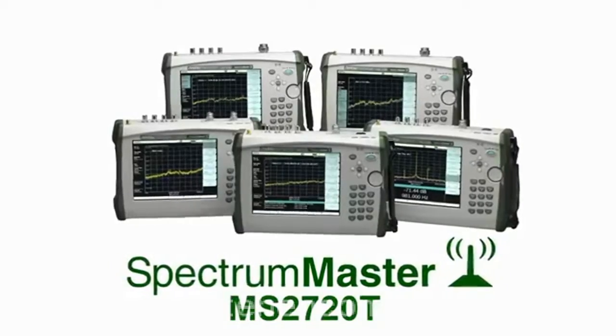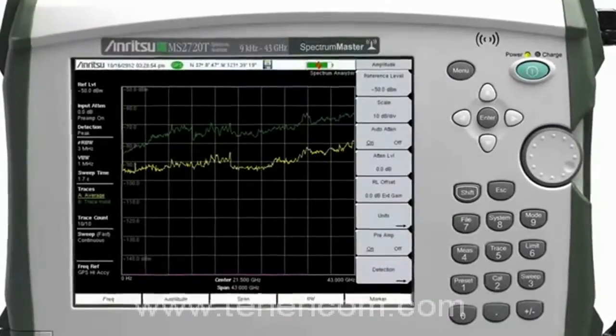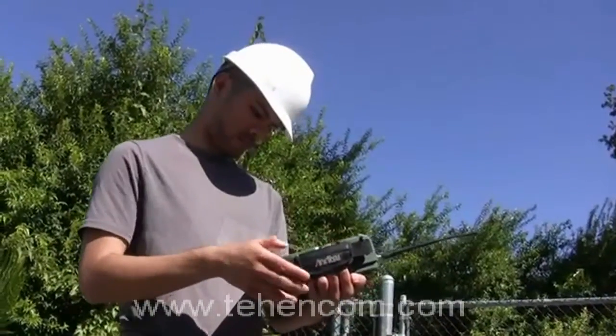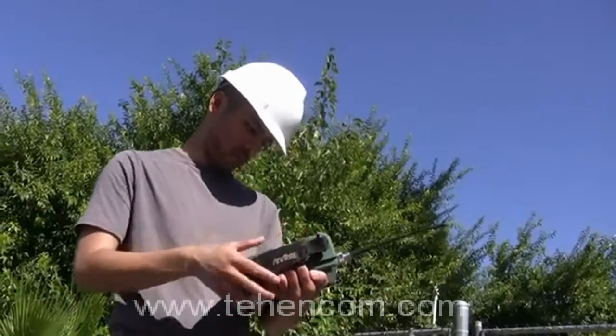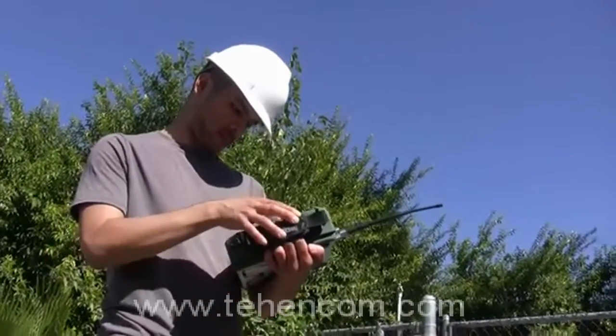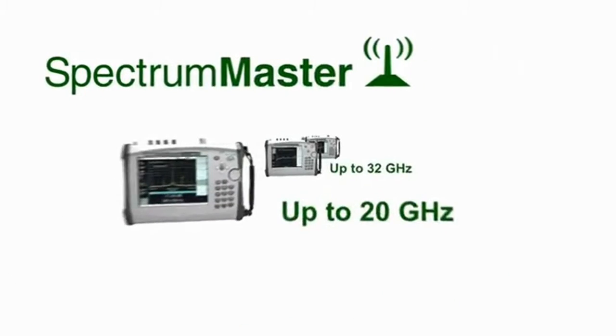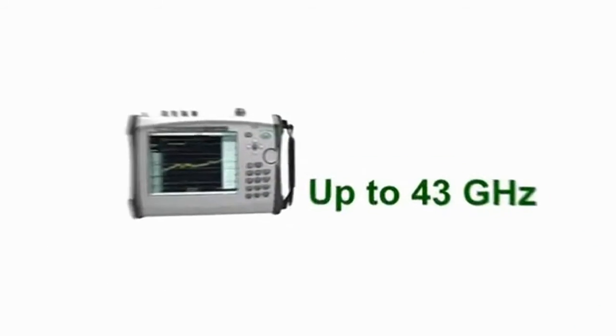The new Spectrum Master MS2720T instruments include a broadband pre-amplifier that operates all the way to 43 GHz, providing unprecedented sensitivity needed for interference hunting. The frequency coverage of all models starts at 9 kHz and extends to 9 GHz, 13 GHz, 20 GHz, 32 GHz, and 43 GHz.